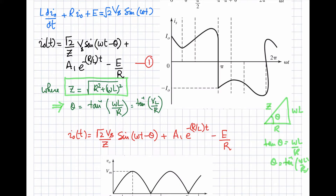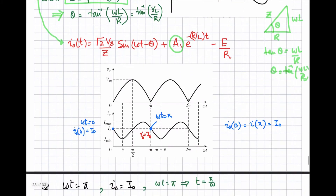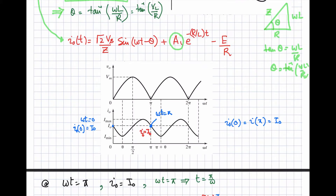The differential equation solution is now rewritten with this expression. We need to evaluate the constant A₁ using boundary conditions. Looking at the current waveform, the current starts at the beginning of the voltage cycle and ends at the end of the first positive voltage cycle — these two are the boundary points. At ωt = 0, and at ωt = π, both give the current value I₀ in steady state.